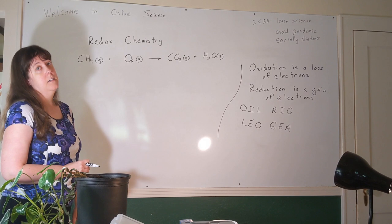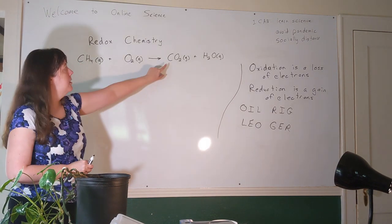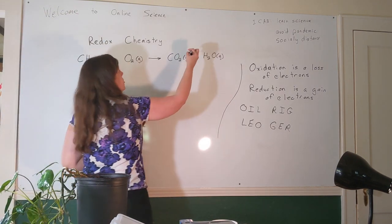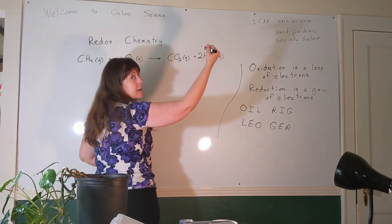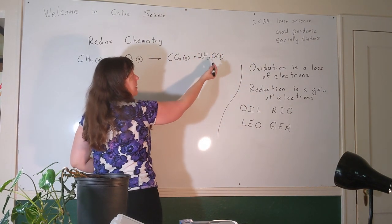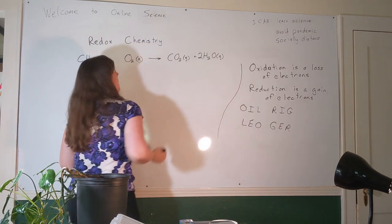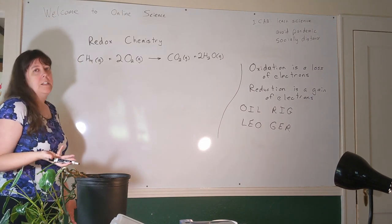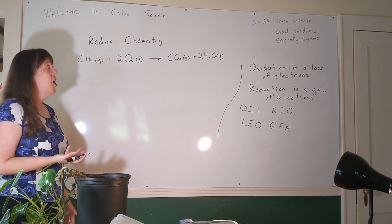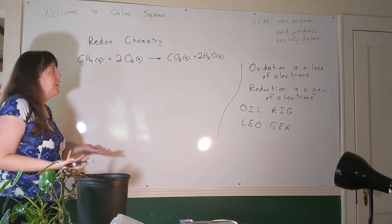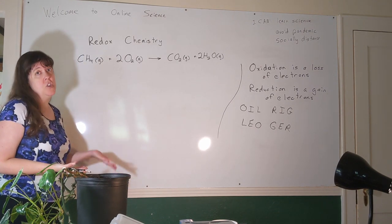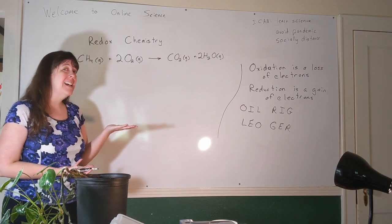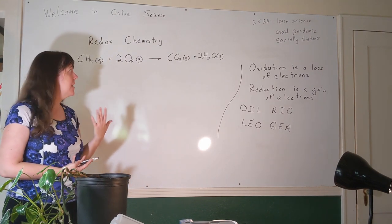Is our reaction balanced? Not yet. Carbon: one on the left, one on the right — balanced. Hydrogen: four on the left, two on the right — put a 2 in front of water. Now oxygens on the right: two in CO₂ plus two in 2H₂O gives four total; put a 2 in front of O₂. But these compounds don't have charges — they're covalent compounds. Covalent compounds share electrons and their atoms don't have charges, so we need a better way to figure out what's oxidized and reduced.